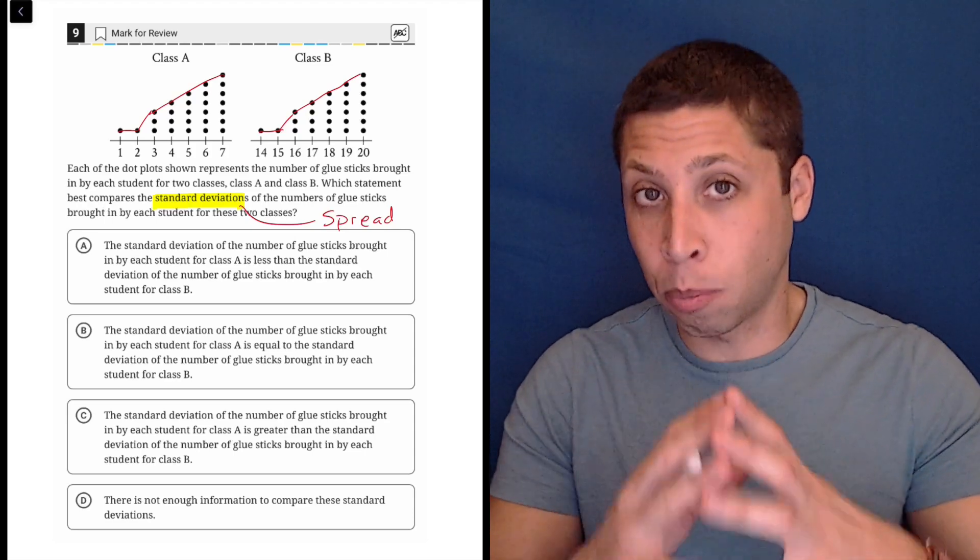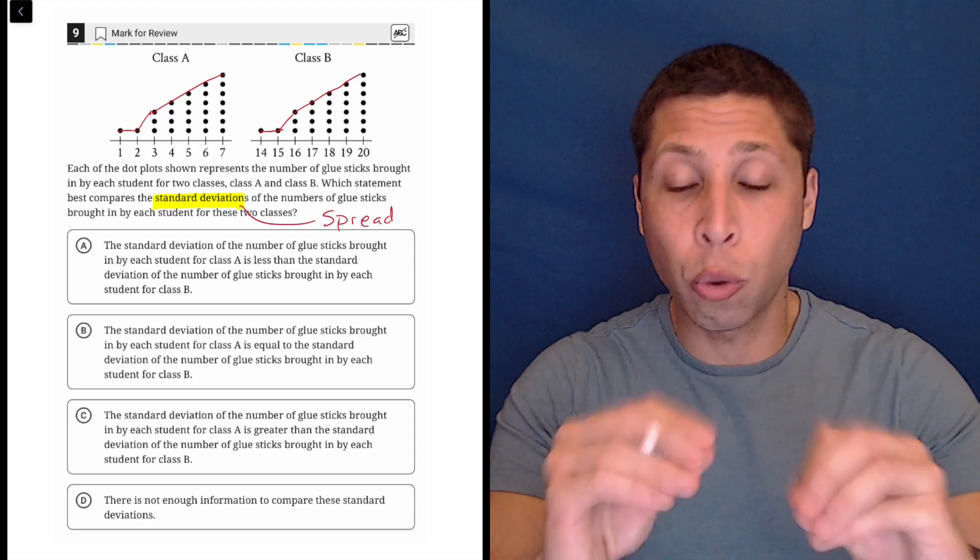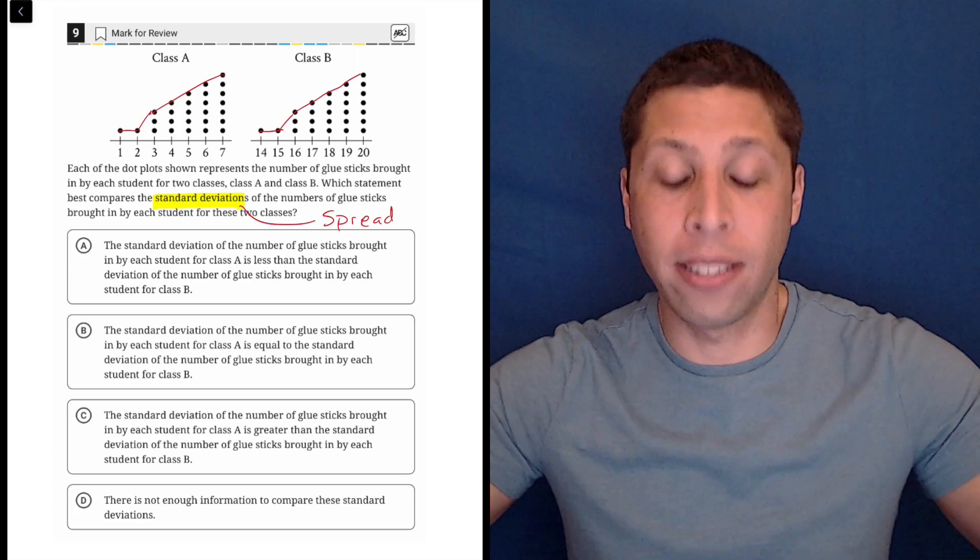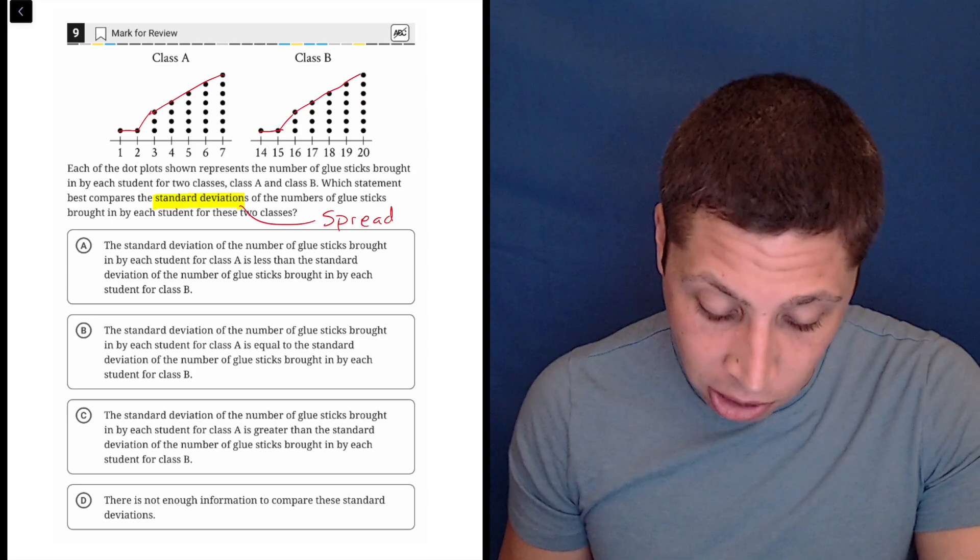It's the same shape, meaning the spread of that data. Each individual dot there is a data point. The spread is the same. The dots are laid out in the exact same way, so we're looking for something that says they're equal.